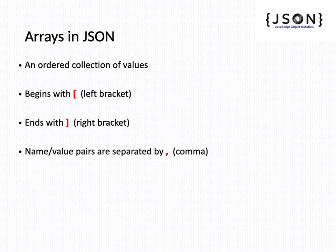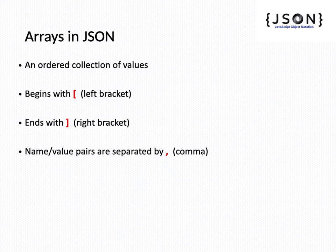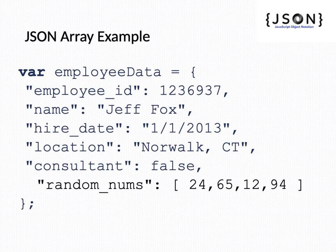Now we will see arrays in JSON. An array in JSON is an unordered collection of values. The values are enclosed in square brackets — beginning with a left bracket and ending with a right bracket. Name-value pairs are separated by comma; array values can also be name-value pairs. In this JSON array example, the employee data object has employee_id: 1236937, name: Jeff Fox, and hire_date: 1/1/2013.